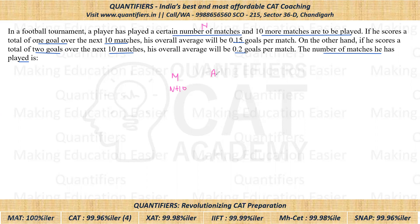In the first case, the average is 0.15, and in the second case, the average is 0.2. Now, just look at the difference between the total number of goals — the difference will be one goal only. Because in the first case he is scoring one goal in the next 10 matches, and in the other case he is scoring two goals. So the difference between total number of goals is only one.